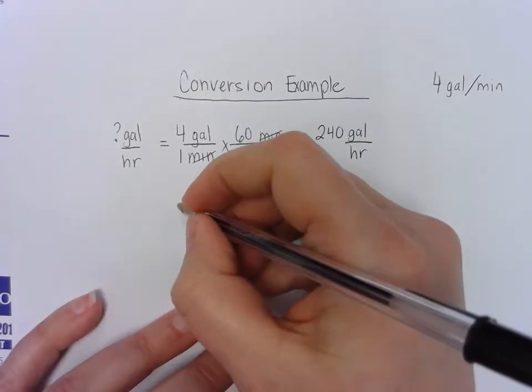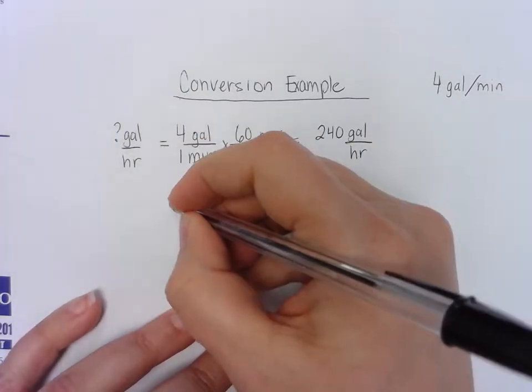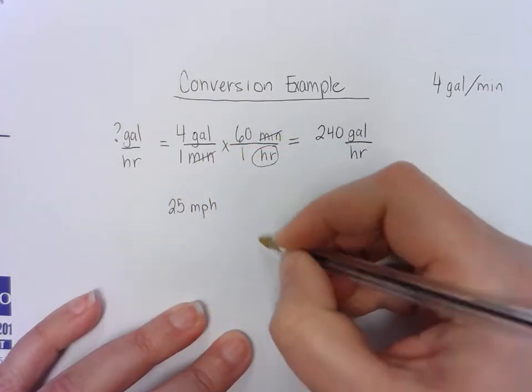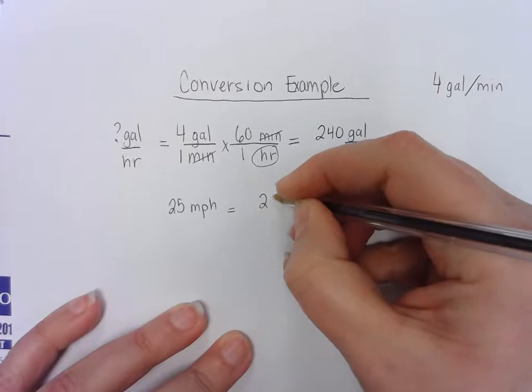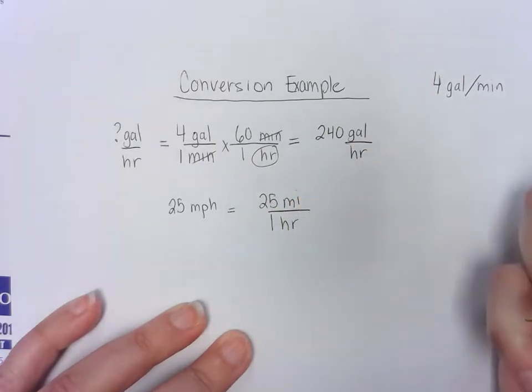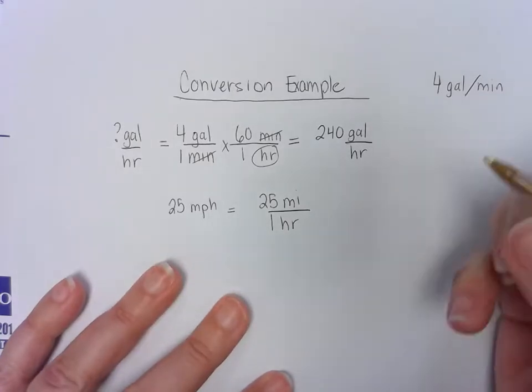Sometimes you have more complex things like the speed limit in town is 25 miles per hour. And what that really means is that it's 25 miles for every one hour. If you were to drive an hour at that speed, you would have only gone 25 miles.